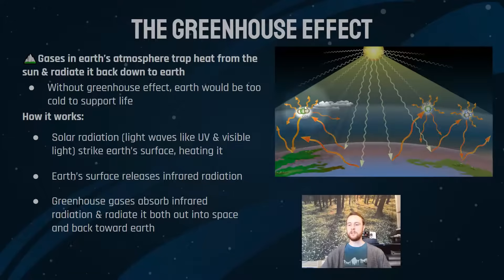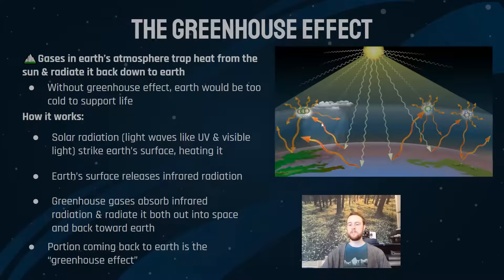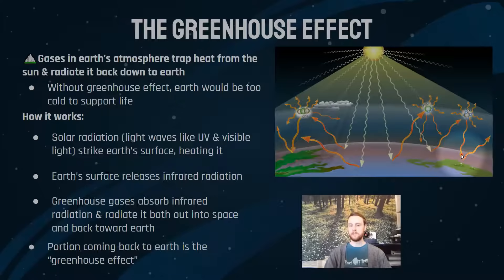It's important to point out that greenhouse gases also radiate energy out away from Earth's surface. But the greenhouse effect specifically refers to the portion of infrared radiation radiated back down towards Earth — that's what we feel as warmth or heat. Quick recap: visible and UV light comes in from the sun, strikes Earth's surface, changes to infrared radiation, hits greenhouse gases like carbon dioxide, water vapor, and methane, and the portion radiated back down is the greenhouse effect. This is why Earth is warm enough to support life, but also why adding more greenhouse gases can make Earth too warm.